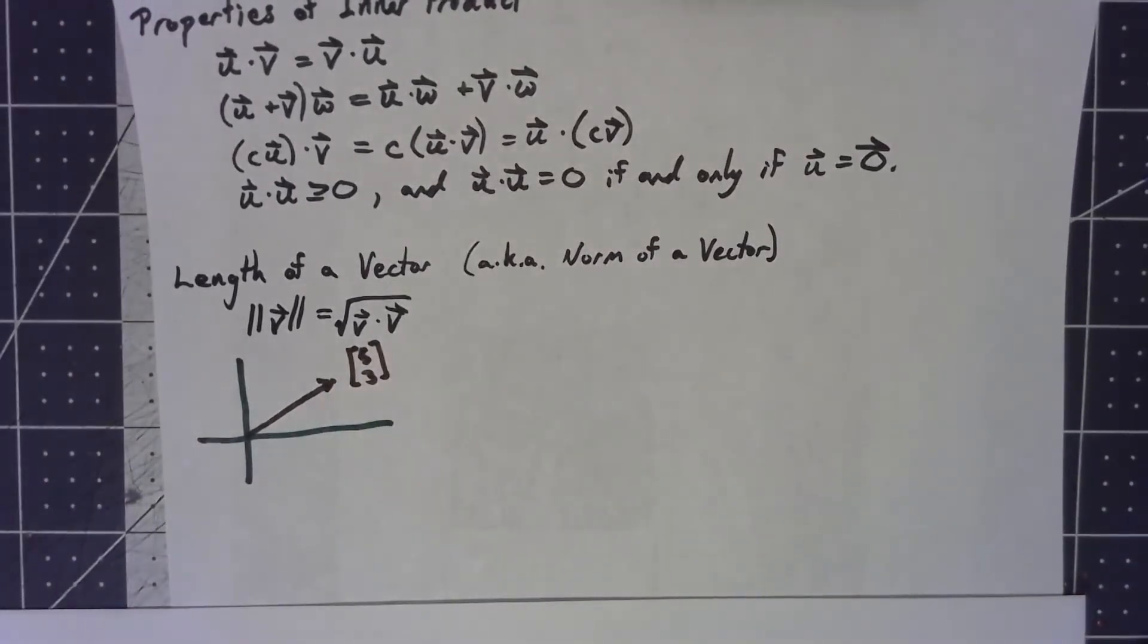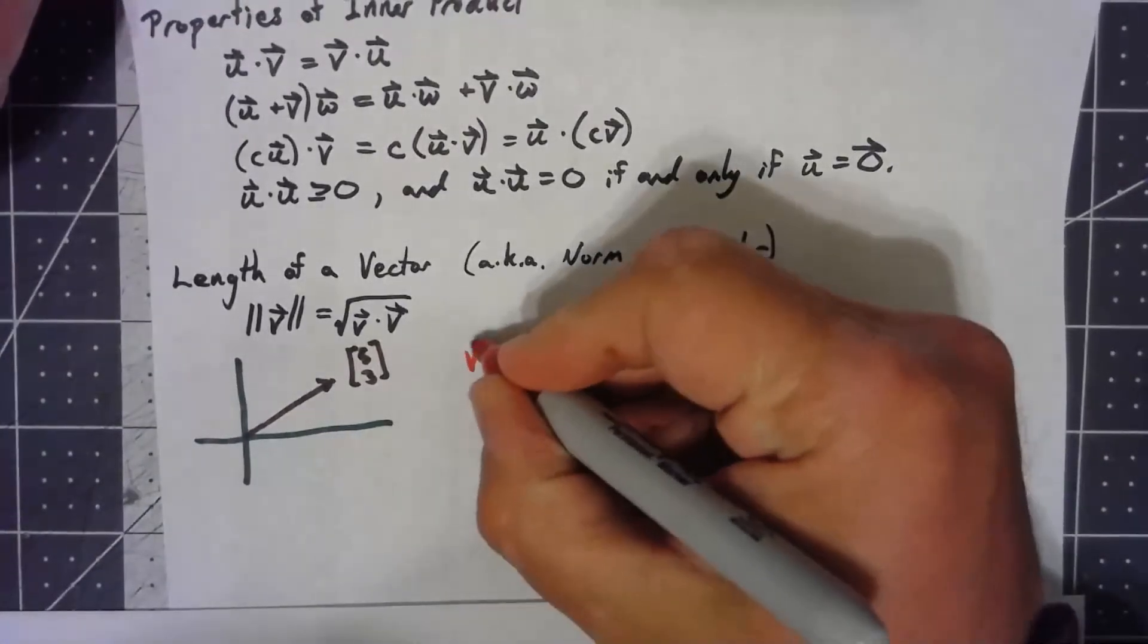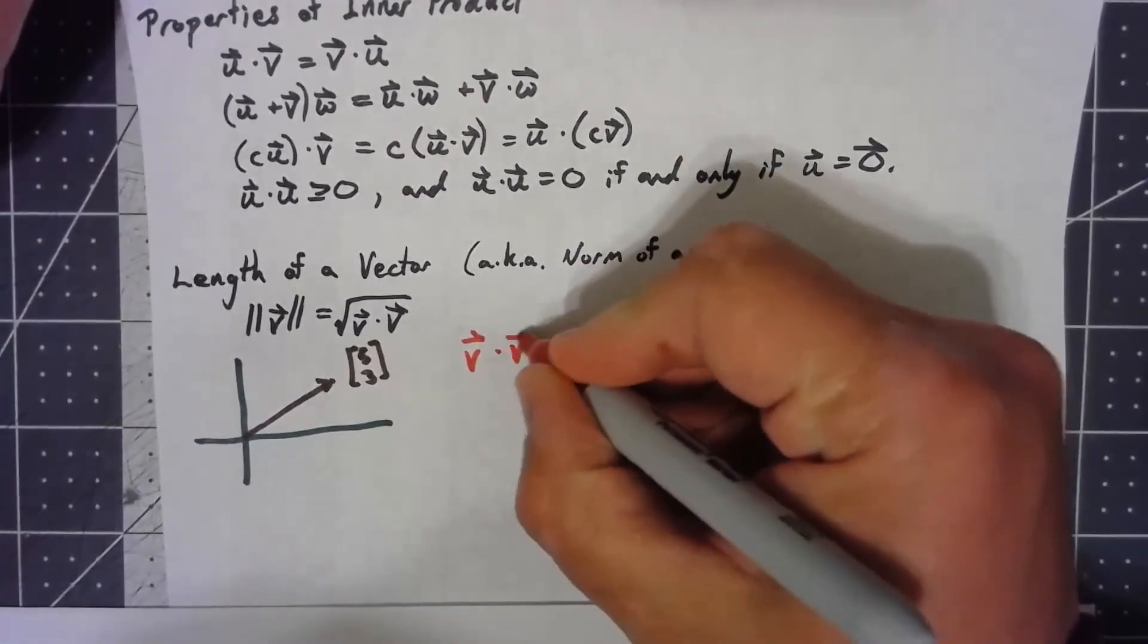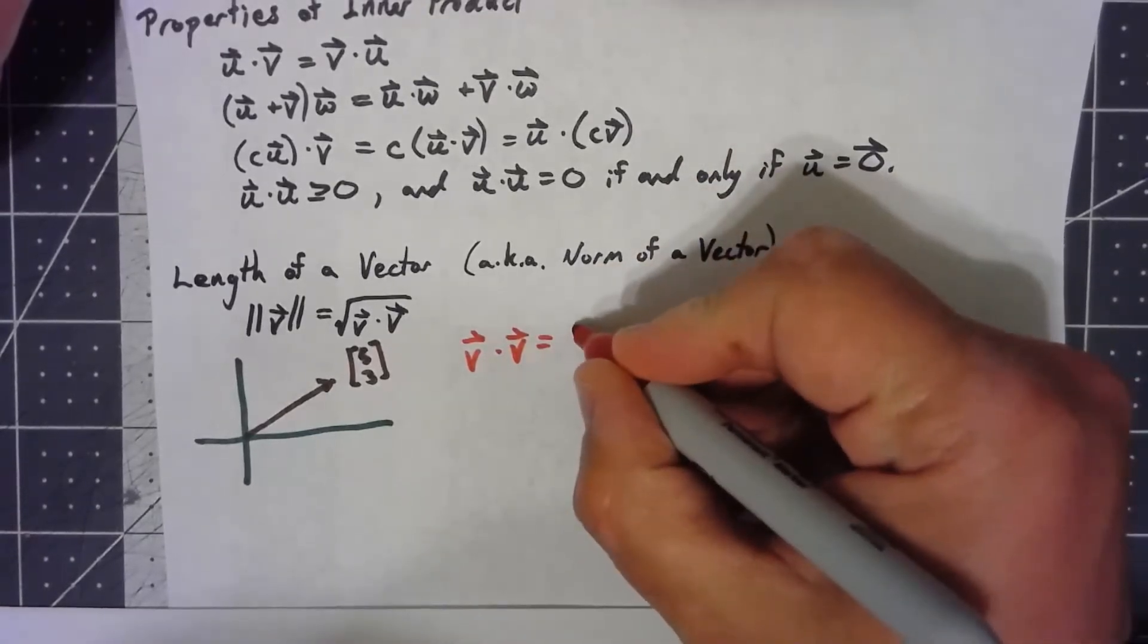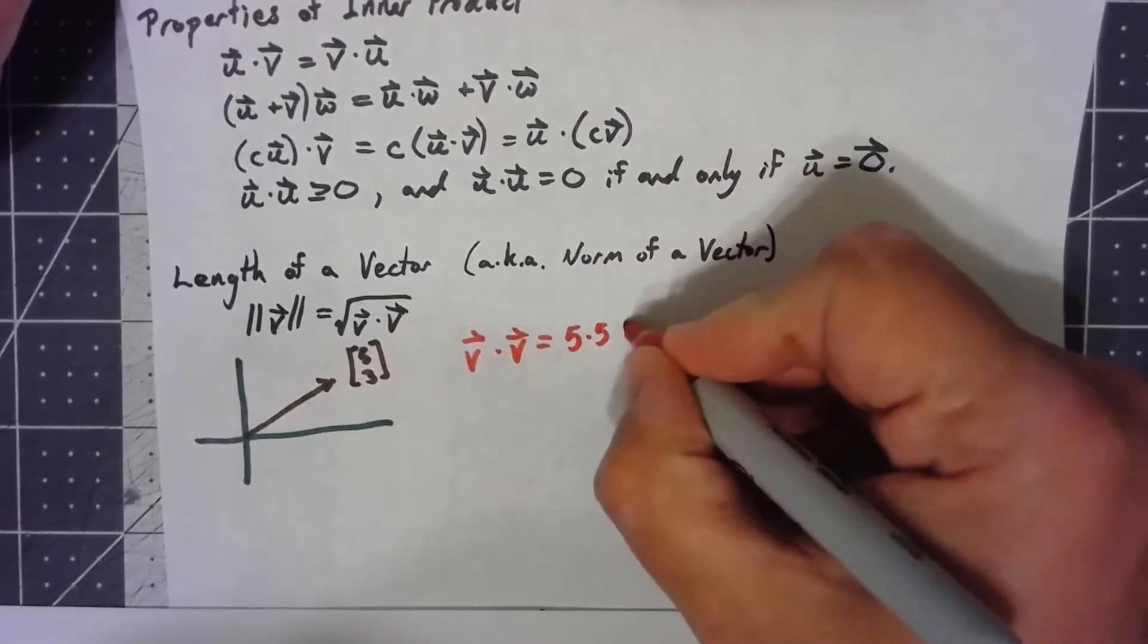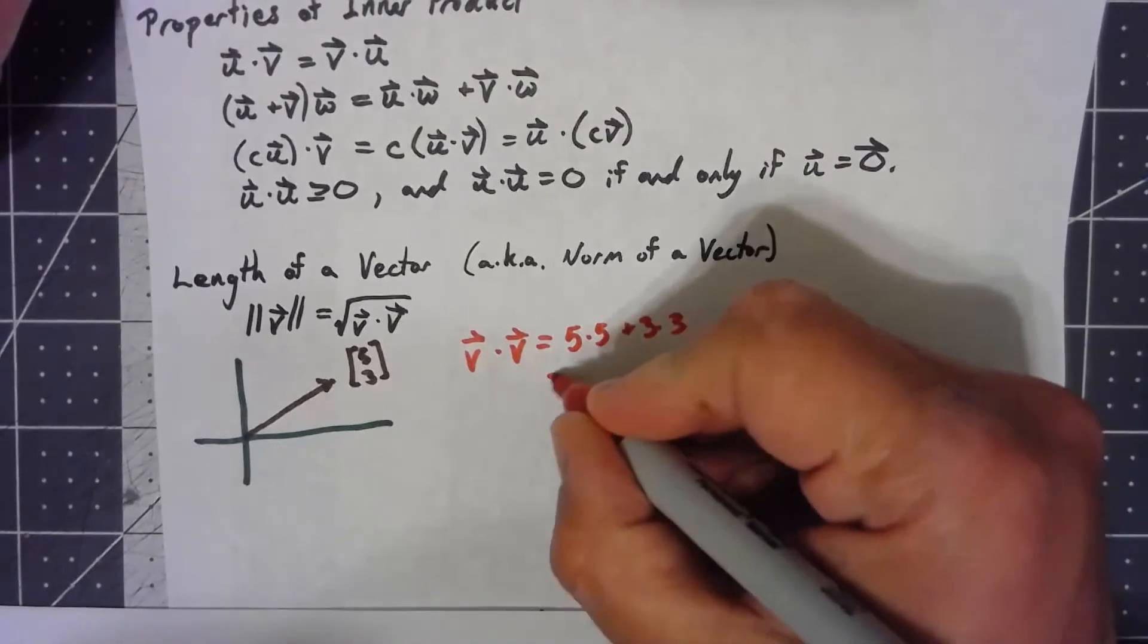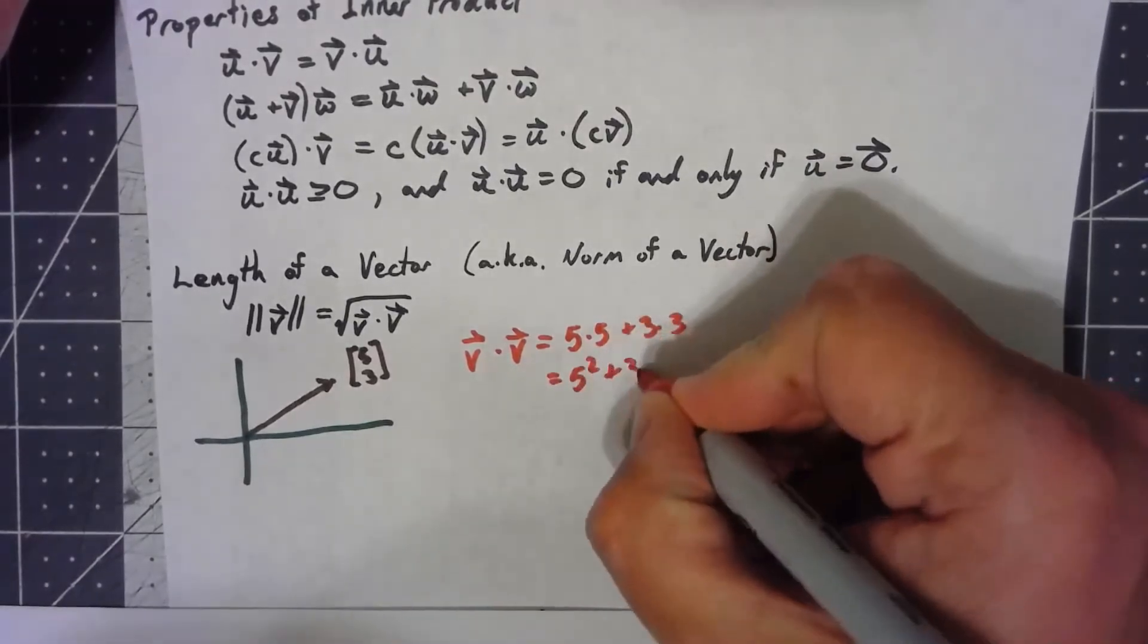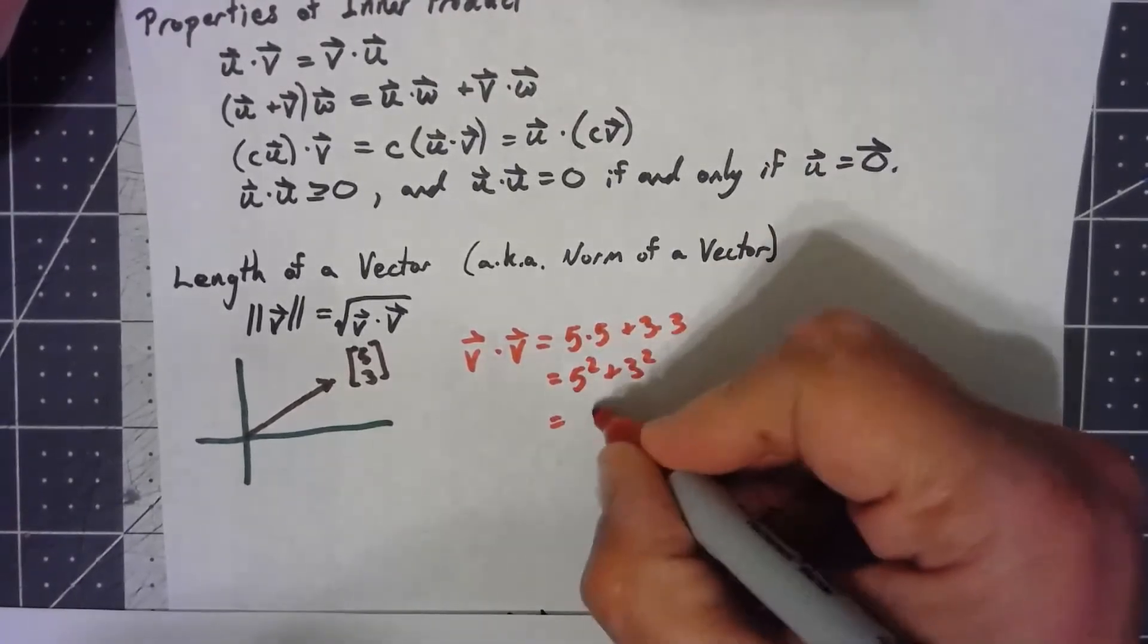And what happens if I dot that vector with itself? Well, that vector dotted with itself would be 5 times 5 plus 3 times 3, 5 squared plus 3 squared, or 34.